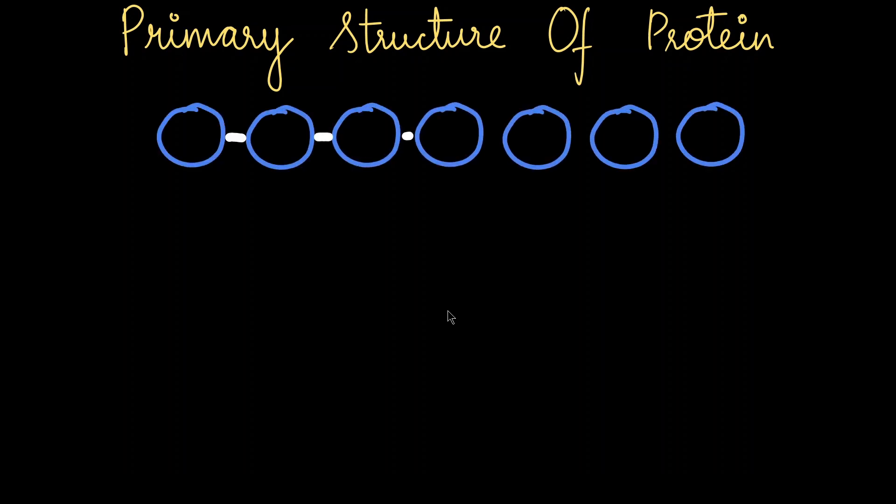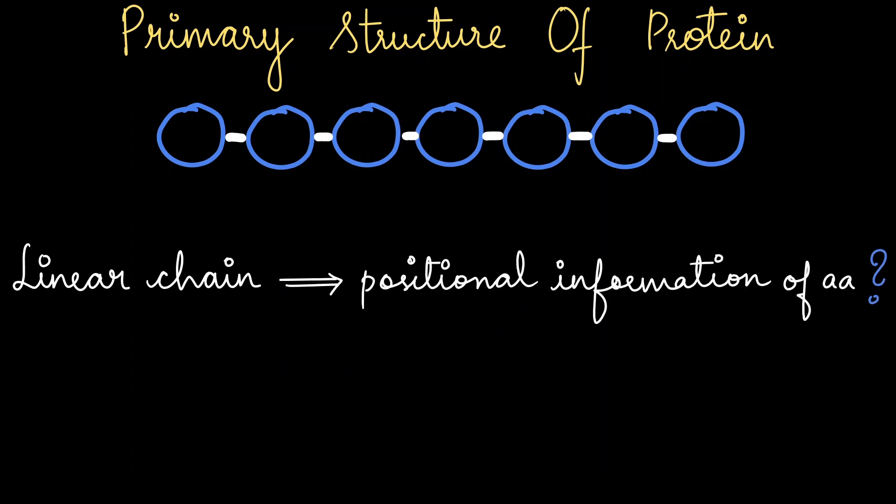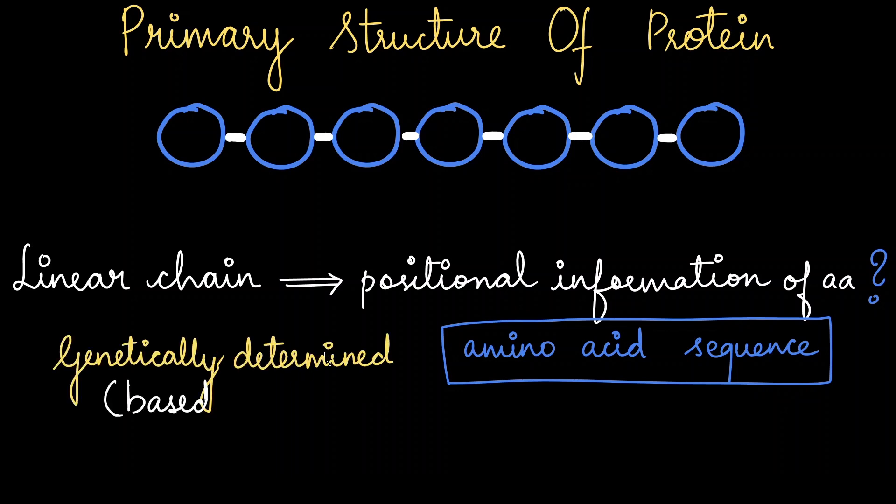Primary structure is a string of amino acids. It's a linear structure which gives you positional information of the amino acids—it gives the amino acid sequence: which amino acid comes first, which comes fifth, which comes seventh. The amino acid sequence is genetically determined, meaning it is based upon the DNA sequence itself.